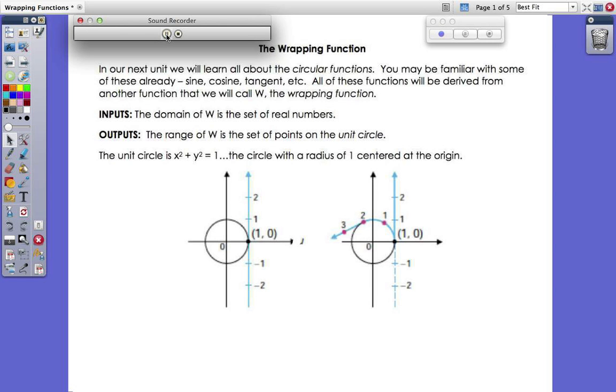The key to understanding the wrapping function is to get a good understanding from the get-go about the inputs and the outputs of the wrapping function. To just say it explicitly, the inputs of the wrapping function is the set of all real numbers, and the outputs is the set of points on the unit circle. The unit circle you might remember from geometry. It's the circle whose equation is x squared plus y squared equals 1, and that's to say it's the circle centered at 0, 0 at the origin with a radius of 1.